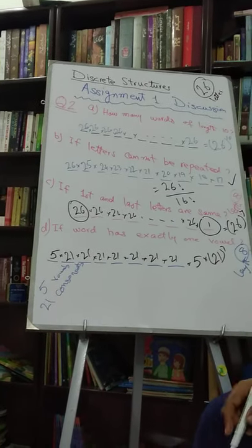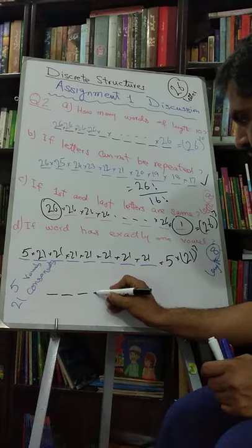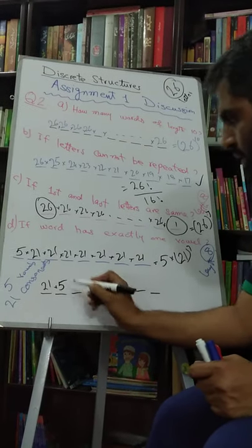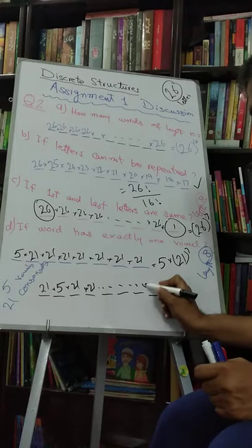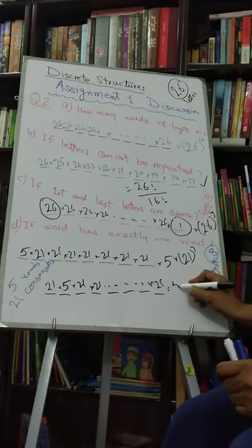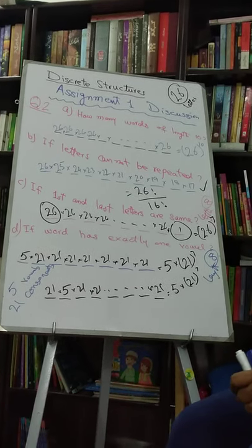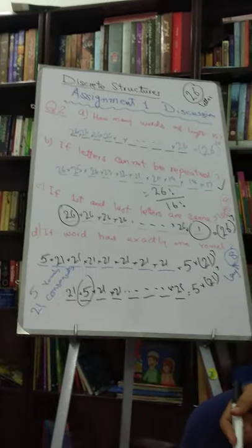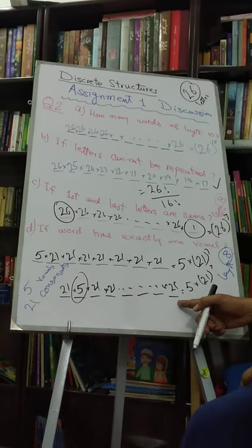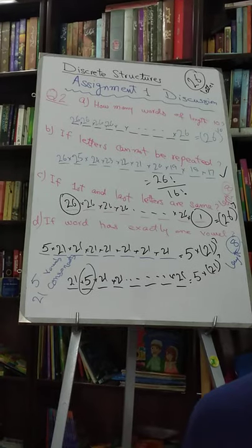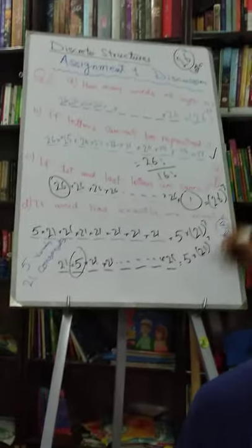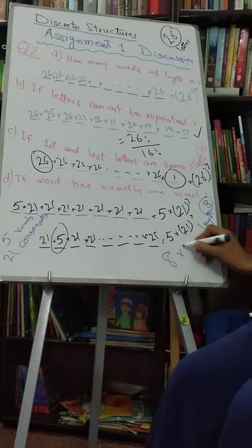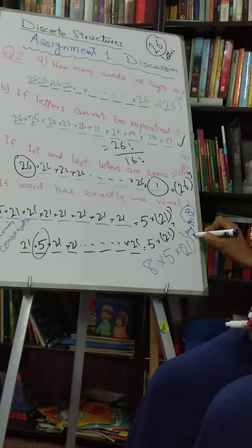But why put the vowel only at the first place? It could be at the second place: 21 consonants first, then 5 vowel choices, then 21 consonants for the rest — also 5 into 21 raised to the power 7. Similarly the vowel could be at the third, fourth, fifth, sixth, seventh, or eighth place. So the possible positions for the vowel are 8 in total. Therefore the total number of words is 8 times 5 times 21 raised to the power 7.